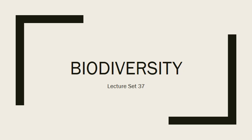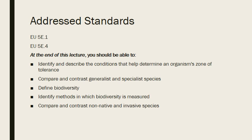This is lecture set 37, reviewing biodiversity. Your standards for this lecture are 5E.1, which deals with how ecosystems have a zone of tolerance that determines the optimum conditions for survival, and 5E.4, where human activities can lead to biodiversity loss through overfishing, invasion by exotic species, habitat destruction, and poaching.